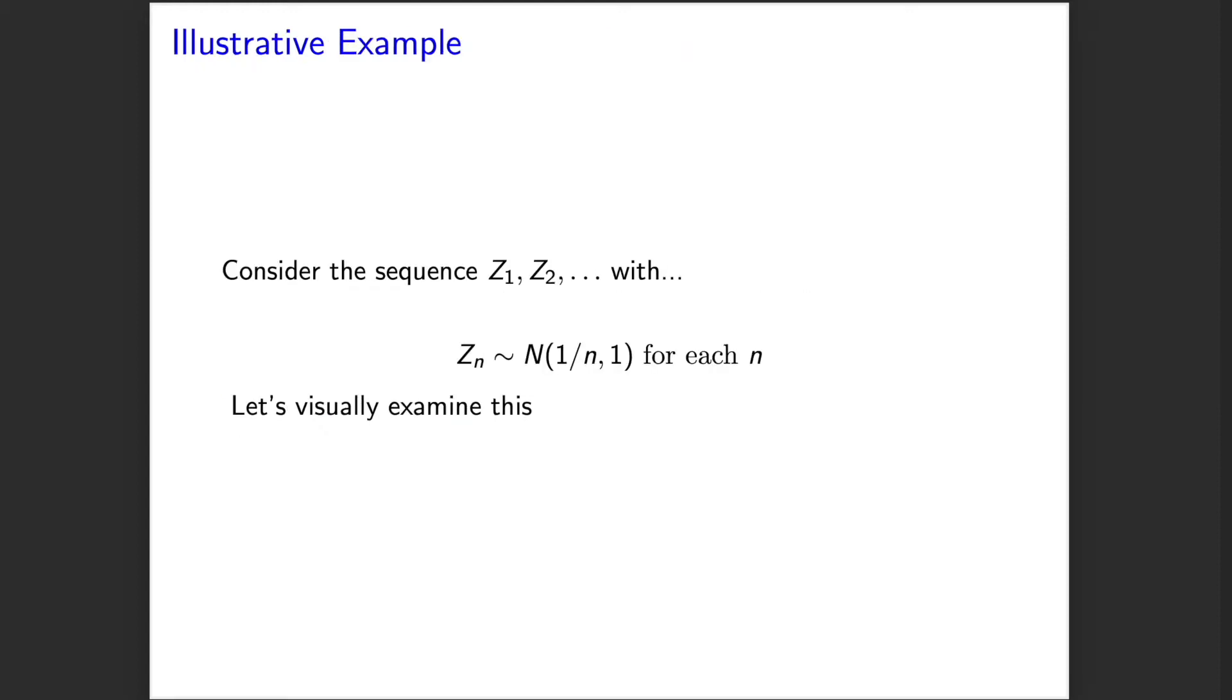To better understand this, we're going to consider an illustrative example. Here, we're going to consider a sequence of random variables, each of which is Gaussian with variance 1 but with mean that decreases. So for the nth random variable, it's going to have mean 1 over n. Let's visually examine this.